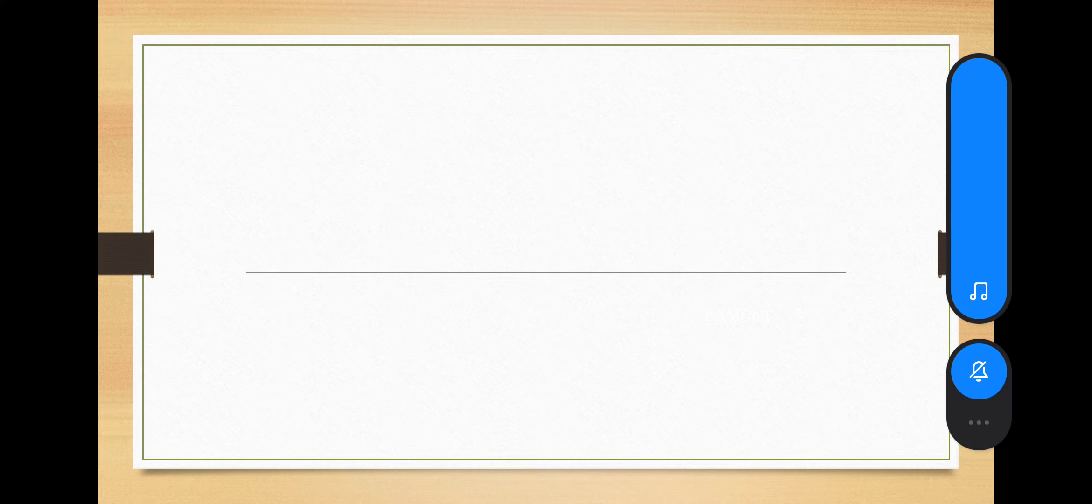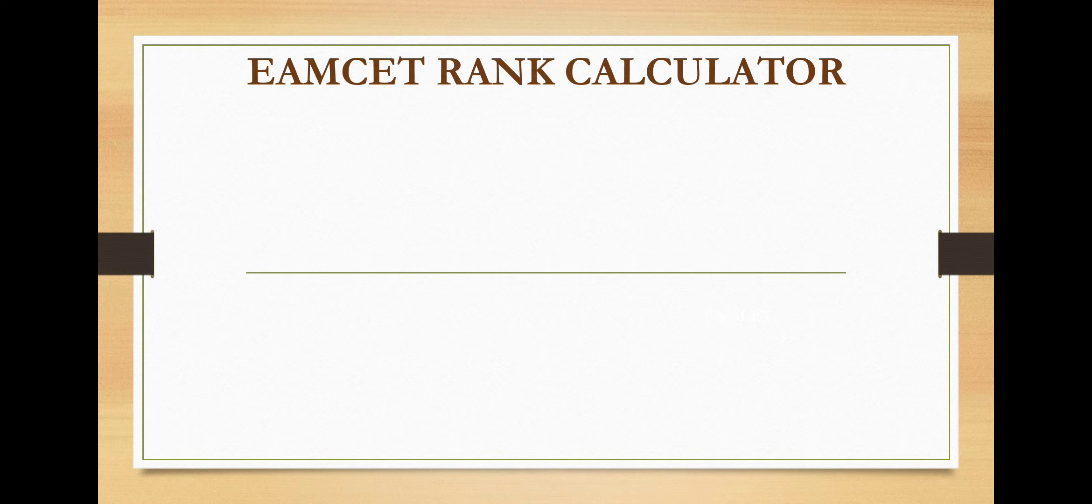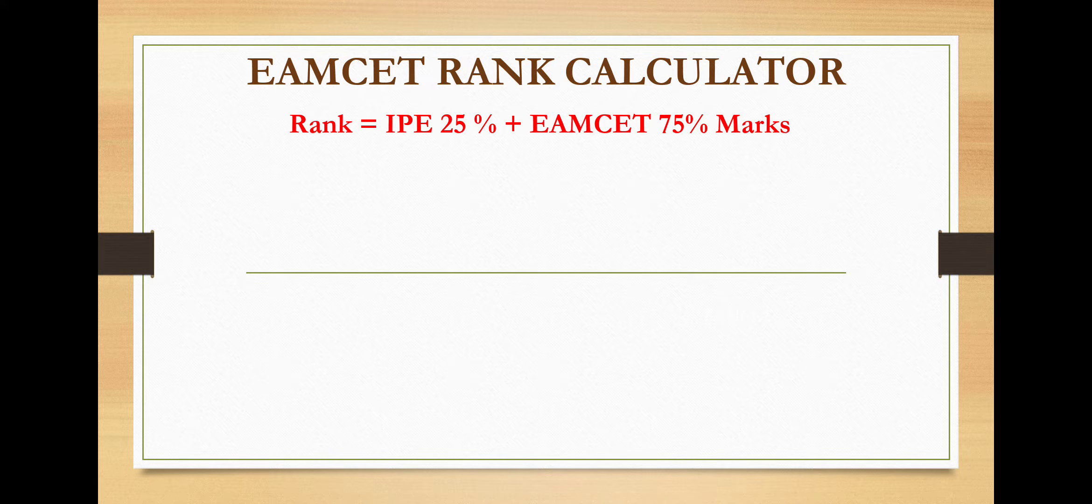Good evening everyone. Today we are going to discuss or let us put some light on EAMCET rank calculator. Most of the students have a doubt how to calculate EAMCET rank. Let us see how a rank is calculated based on IPE marks and EAMCET marks. 25% of IPE plus 75% of EAMCET marks gives you a rank.